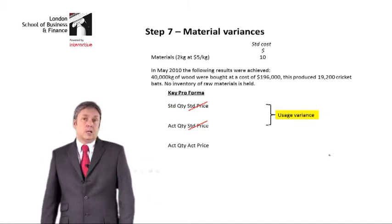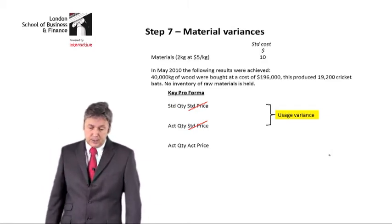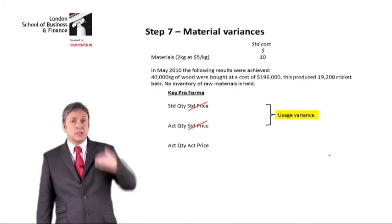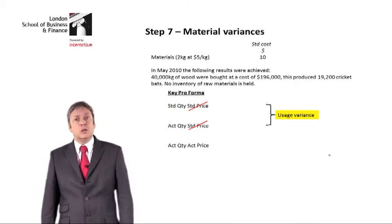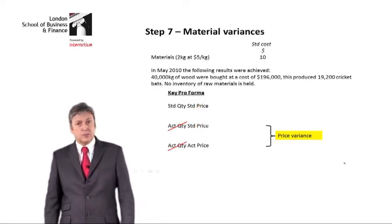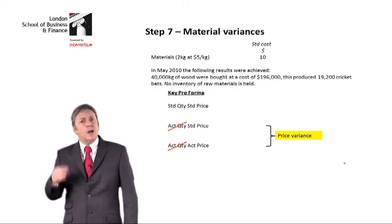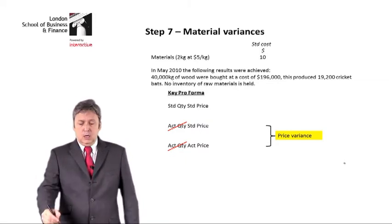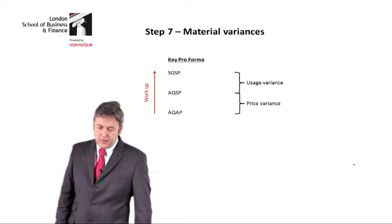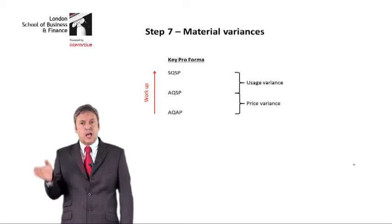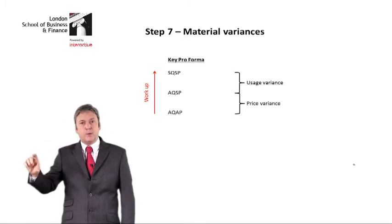By comparing the top two comparators, the standard price remains the same, so the only thing we're comparing is the quantity — standard to actual. That means we're looking at the usage variance. If we compare the bottom two, the actual quantity remains the same and the only thing that differs is the price — standard to actual. So, looking at our overall proforma: standard quantity, standard price; actual quantity, standard price; actual quantity, actual price. Compare the top two to get the usage. Compare the bottom two to get the price.